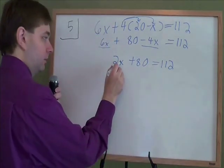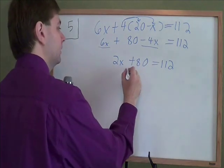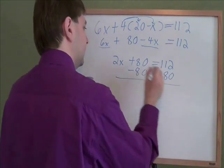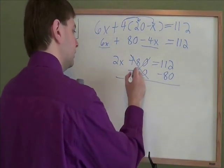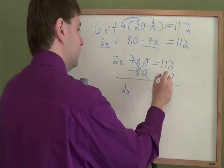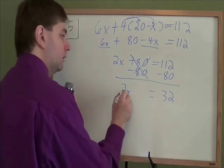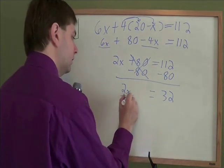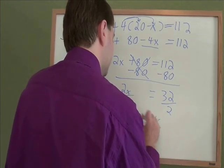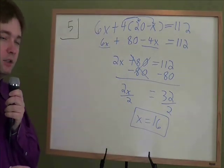All right, getting closer, and we want to get x by itself. Next step, we need to get rid of this 80. We're going to subtract 80 on both sides. 80 minus 80 cancels out. 2x comes down. 112 minus 80 ends up being 32. 2x equals 32. We divide by 2. We have x equals 16. 16 people had noodles for lunch. And that is our answer.